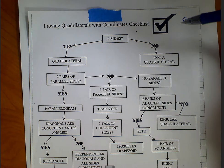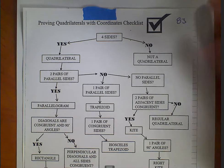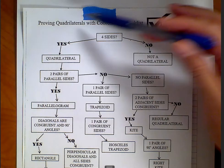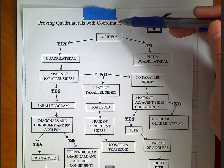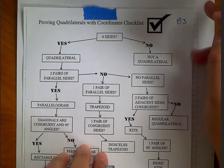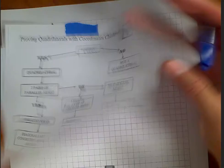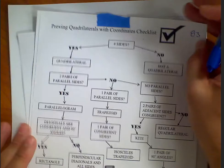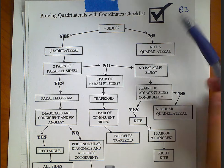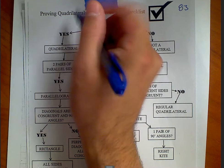Working on page 83 in the notebook. We're doing proofing quadrilaterals with coordinate checklists. There's a page with graph paper so we can actually go through and solve for some of these things. The word quadrilateral means four — quad is four — so it must have four sides.